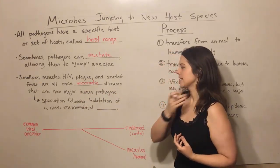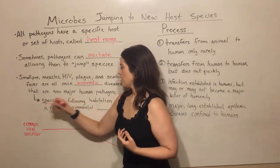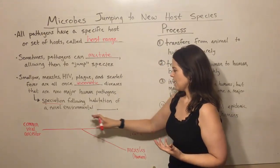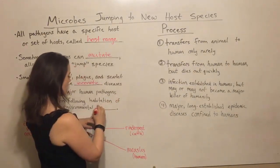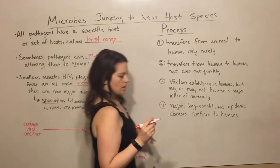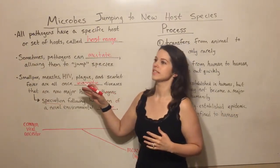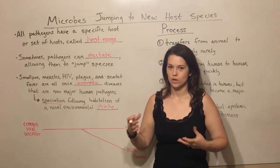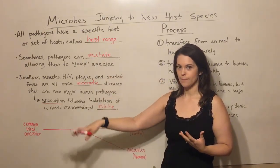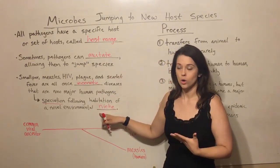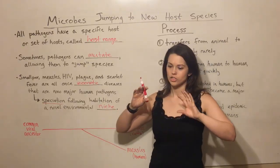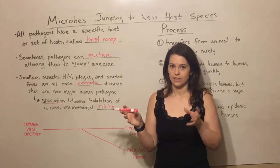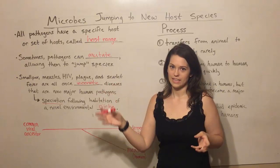This is actually an example of speciation following habitation of a novel environmental niche. A novel environmental niche just means there was an ancestral pathogen that could not infect humans. At some point it mutated and was able to infect humans, and that new host was the new niche. You then get two species of pathogen — one capable of infecting the new species and one capable of infecting the old species.